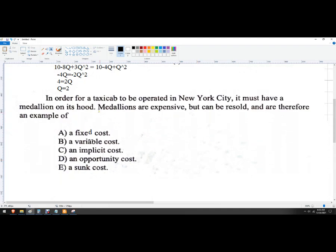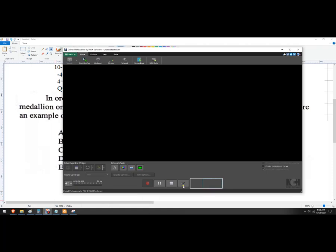A little bonus multiple choice question here. In order for a taxi cab operating in New York City must have a medallion on its hood. Medallions are expensive but can be resold and therefore are an example of a fixed cost. It's not a sunk cost. Sunk costs can't be recovered. So that's the difference there. It doesn't matter how much the taxi driver drives. That medallion is going to be a fixed cost.